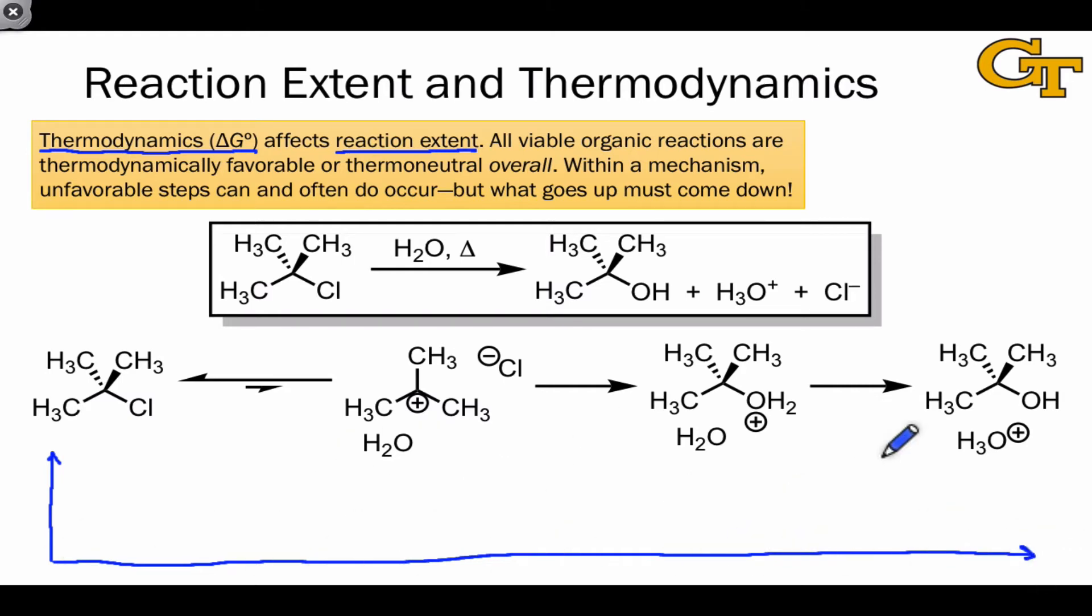For this mechanism, if we draw a reaction coordinate diagram underneath, we find that the overall process is thermodynamically favorable. However, intermediates within the reaction pathway are higher in energy than the reactants. This uphill climb in the first step means that first step actually favors the reactants.